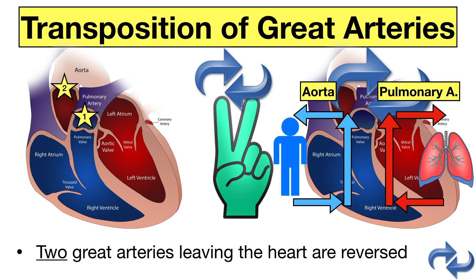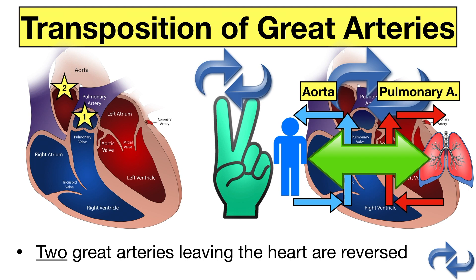This creates two separate circuits: deoxygenated blood flows from the right side of the heart to the rest of the body instead of the lungs, and oxygenated blood flows from the left side to the lungs instead of the body. There needs to be a connection between the two circuits, so there's typically a patent ductus arteriosus or ventricular septal defect present. This leads to deoxygenated blood being delivered to the body and subsequent cyanosis. Use two crossed fingers to remember transposition of great arteries and how the two great vessels are reversed.